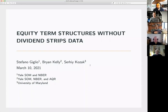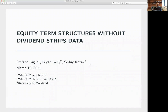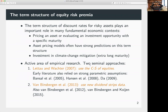This paper is about estimating basically the same information that we have from dividend strips by using just the cross section of equity. It's a paper with Brand Kelly and Circuit Cause. Let me start with a bit of motivation. There are many reasons why we are interested in the construction of discount rates, especially for risky assets.